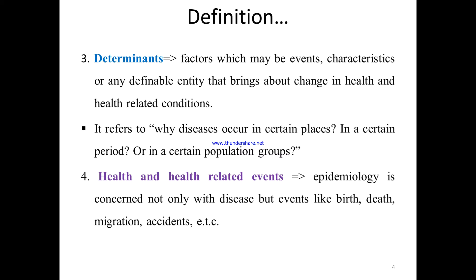The other variable is determinant — a factor which may be an event, characteristic, or any definable entity that brings about a change in health and health-related conditions. It refers to why disease occurs in a certain place and tells about what factors enhance the occurrence of disease or what factors reduce the existing situation.